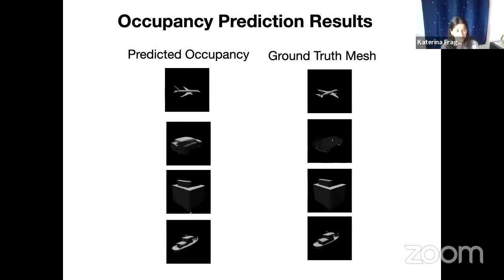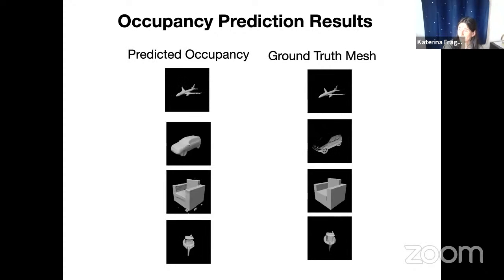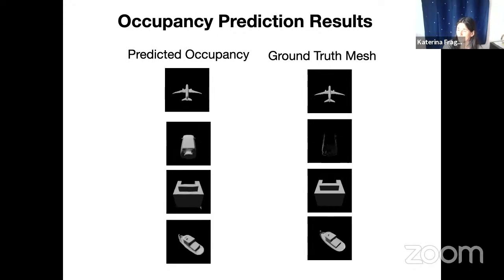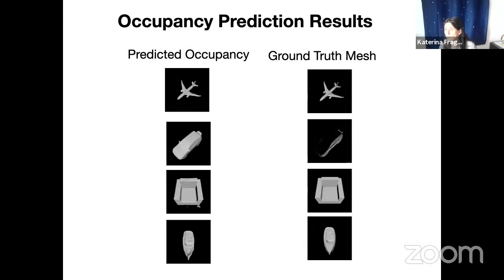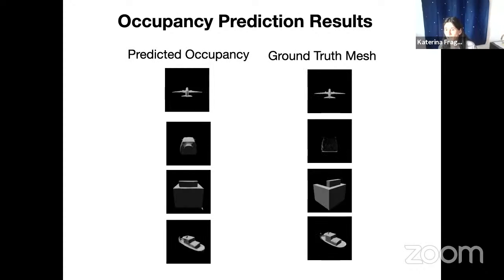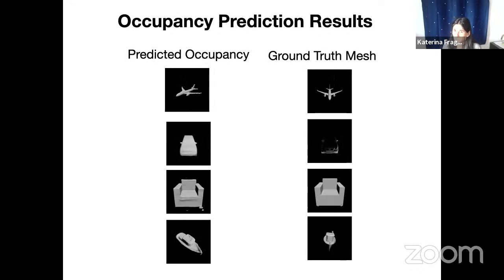That's the first part of the talk. Next I'll discuss how to use these feature representations for learning object interactions.